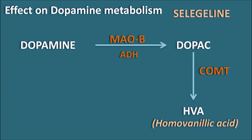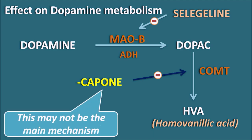In this metabolism, either MAO-B can act first, or COMT can also act. Both enzymes are involved in the conversion of dopamine into homovanillic acid. MAO-B enzyme is inhibited by selegiline, which is also used in the treatment of Parkinson's disease, and COMT is inhibited by COMT inhibitors — indicated by the suffix '-capone'. In this way, COMT inhibitors can inhibit the metabolism of dopamine within the brain. But this is not the main mechanism of the COMT inhibitors, because even when we block COMT, dopamine can still be metabolized by the MAO-B enzyme.